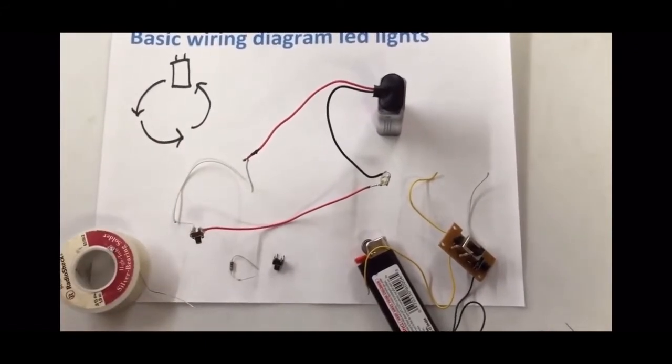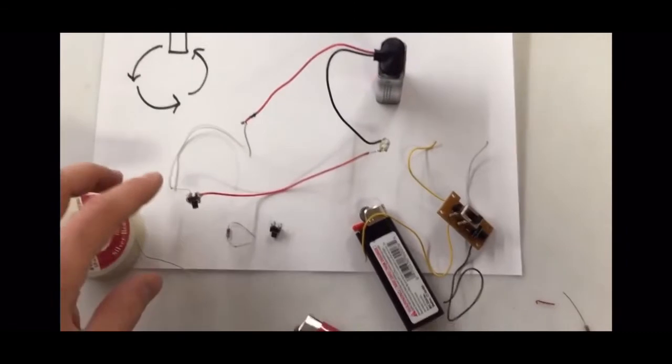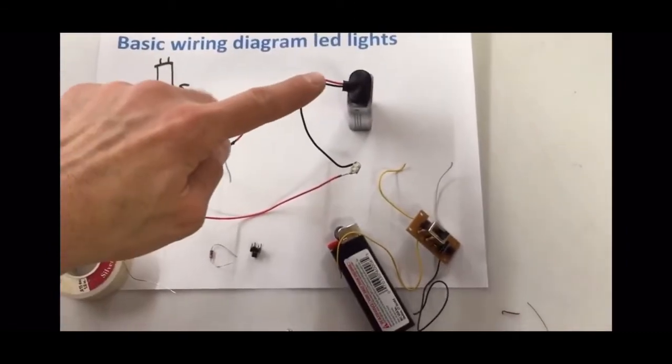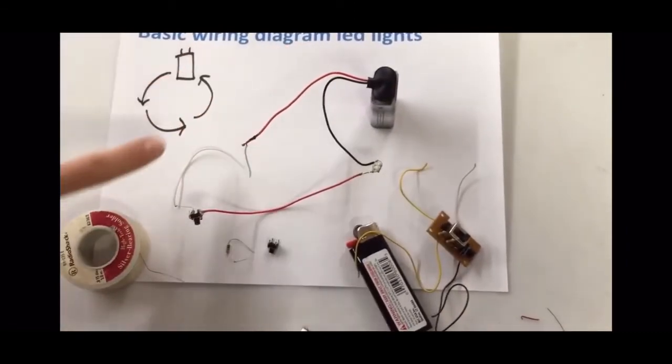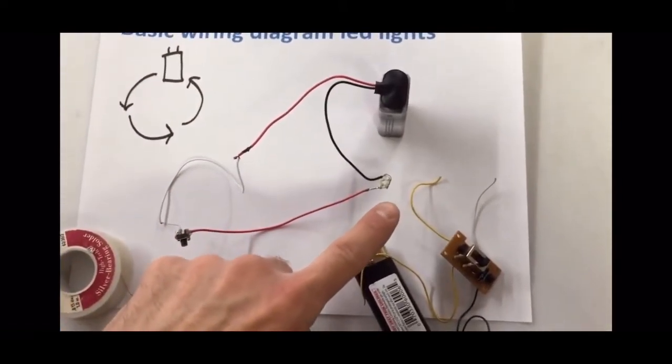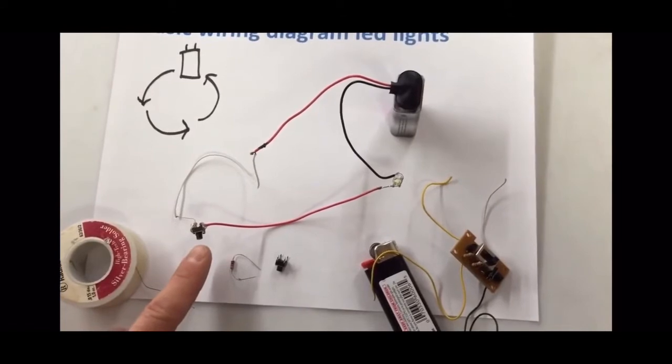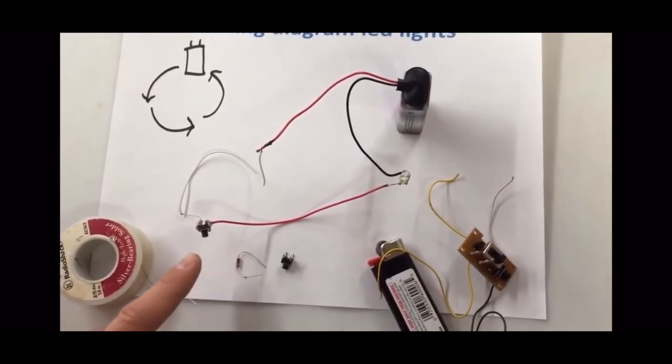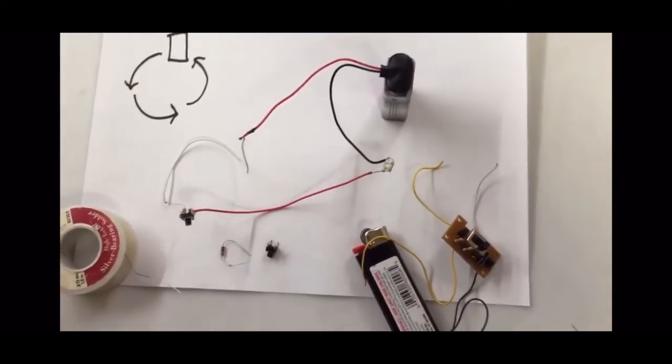As you see here I have the battery positive and negative, and I'm going in a continuous circle. What I have here is an LED light and then between that I have a little on and off switch. I just slapped this together real quick so I could teach you how to do it.